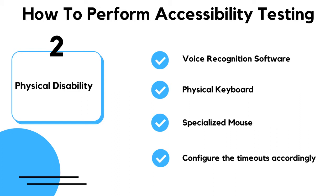To deal with physical disability, check whether there is voice recognition software and test its consistency. For people with a speech disability, check whether the physical keyboard is efficient to use. People with a motor disability should have an option to find human help in case of emergencies. Test the application with a specialized mouse for people with limitations in muscular control. Make sure timeouts are configured accordingly, as users may consume more time for tasks like entering values in a form.